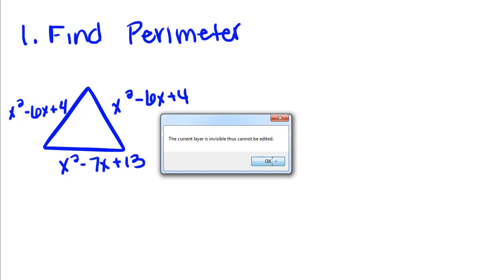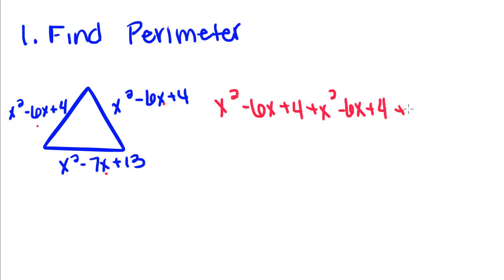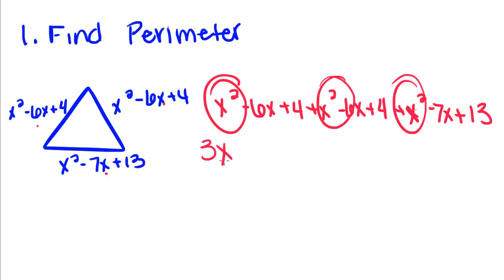We're still going to add up each one of these sides and combine our like terms. So we have x² - 6x + 4 plus x² - 6x + 4 plus x² - 7x + 13. We combine our x-squareds and we have three of them. Negative 6x plus negative 6x makes negative 12x, and plus negative 7x makes negative 19x. And 4 plus 4 is 8, plus 13 is 25.